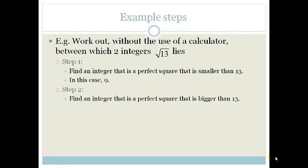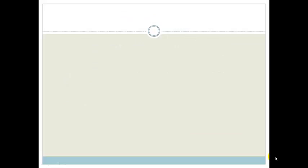Step two, we need to find an integer that is a perfect square that is bigger than 13. In that case, we'd be looking at 16. Now we need to create an inequality. We know that 13 lies between 9 and 16.